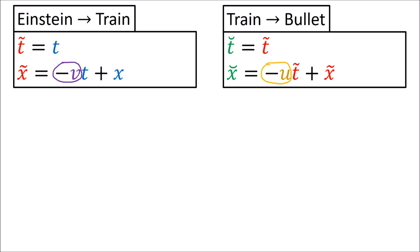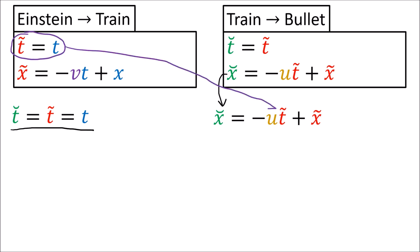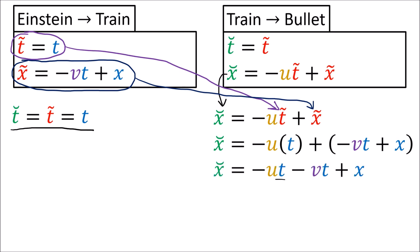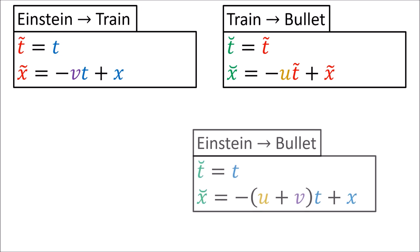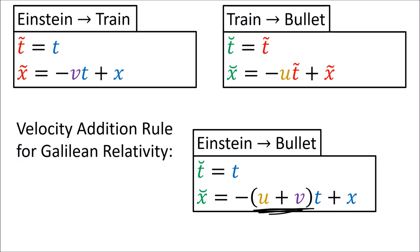To see how the velocities add in Galilean relativity, let's combine these two Galilean transformations together to get a new transformation from Einstein's coordinates to the bullet's coordinates. Time in Galilean relativity is universal for all reference frames, so t-smile equals t-tilde equals t. For position, starting with the equation for x-smile and substituting in the equations for t-tilde and x-tilde, if we factor out t from these terms, we get a new Galilean transformation using velocity u plus v.